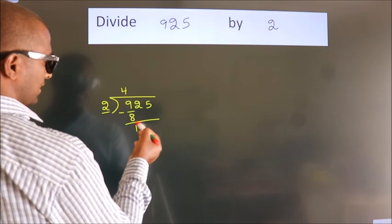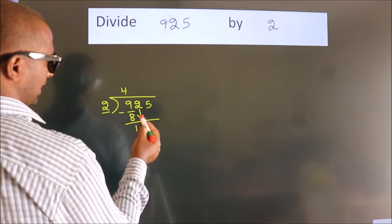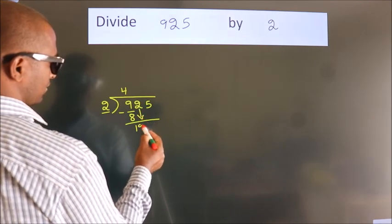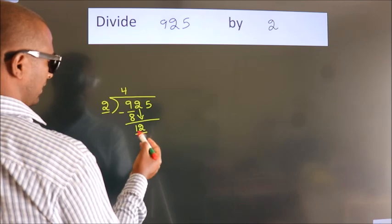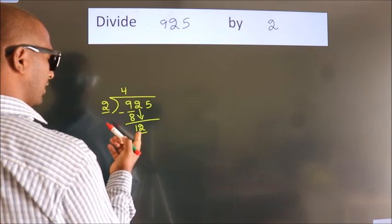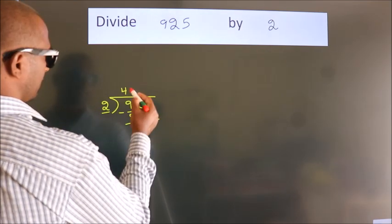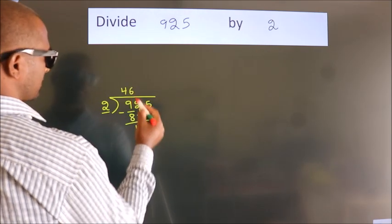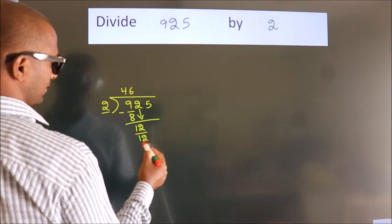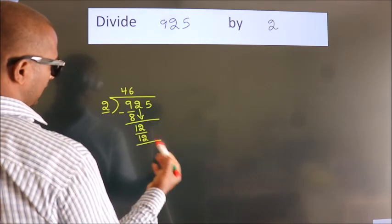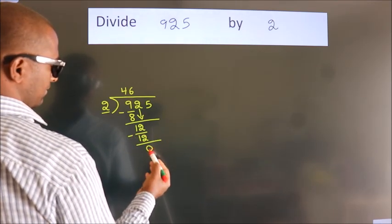After this, bring down the beside number. So, 2 down — so, 12. When do we get 12 in the 2 table? 2 times 6 is 12. Now we subtract. We get 0.